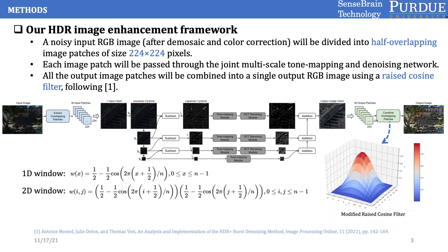Our joint framework consists of five major steps. The first step is extracting overlapping image patches. The step size for extracting image patches is half of the patch size — in our case, the patch size is 224 by 224, and the step size is 112, both horizontally and vertically. Then for each extracted image patch, the second step is to compute its Laplacian pyramid. In our framework, we use four Laplacian layers, and we pass each Laplacian layer to its corresponding tone mapping module and denoising module.